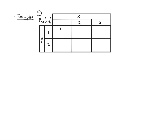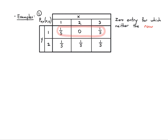Here's a discrete shortcut example. Suppose the joint PMF table has entries 1/5, 0, 1/5, 1/5, 1/5, 1/5. There's a zero entry, but neither the row nor the column containing it is all zeros. Therefore, I can immediately conclude that X and Y are dependent — I don't need to compute any products. But if the entire column were zero, I'd still have to go and work out the products to be sure.